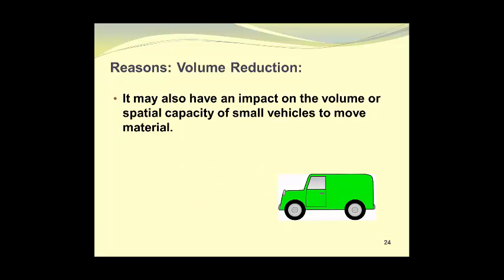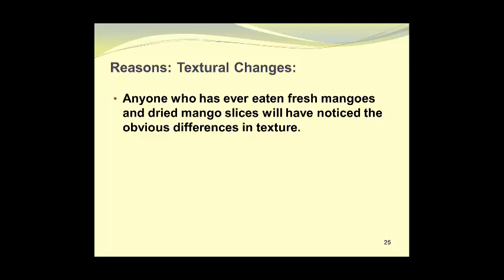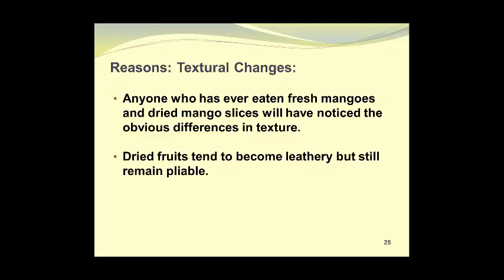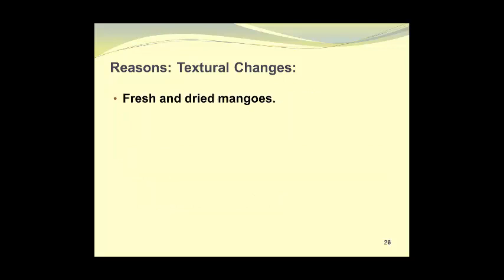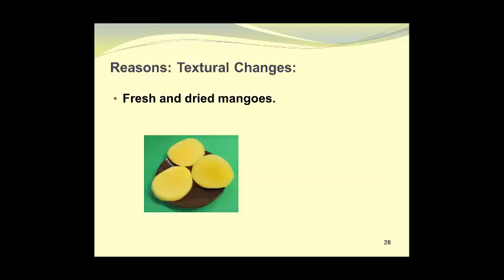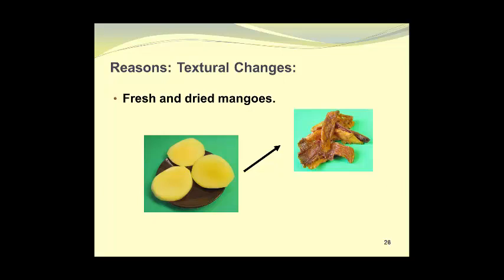Volume reduction may also have an impact on the volume or spatial capacity of small vehicles to move the material. Anyone who has ever eaten fresh mangoes and dried mango slices will have noticed the obvious differences in texture. Dried fruits tend to become leathery but still remain pliable, and the texture of dried fruits has often been described as being chewy. Here we see some fresh mango slices, and we can compare them to slices of mango which have been dried in a hot air dryer. Note the difference in color and the difference in shape and size. In another drying mechanism, using osmotic dehydration, which we will describe in a future video, we can obtain product that looks like this, which is definitely softer and appears to be much more palatable.